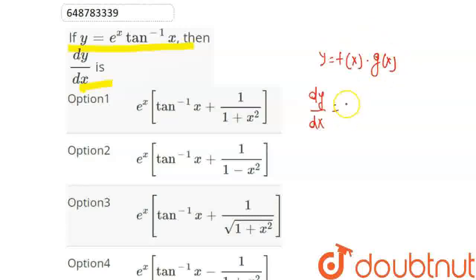We have to apply the product rule. First, the differentiation of f(x) is f'(x), keep g(x) as it is, plus keep f(x) constant and differentiate g(x) as f(x) times g'(x).